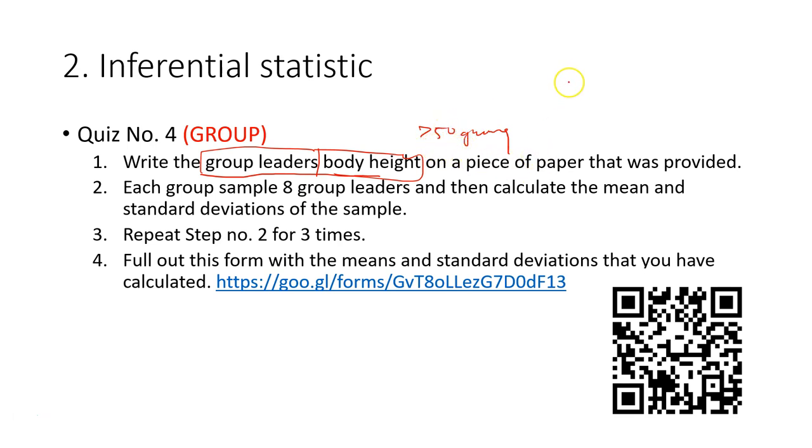What you need to do, you need to download all the data in Excel, so you can see the group and also the body height. Then just print it out and cut each of these observations. You just print on the paper and then cut it up. Body height of each of the group leaders will be on each of these papers.